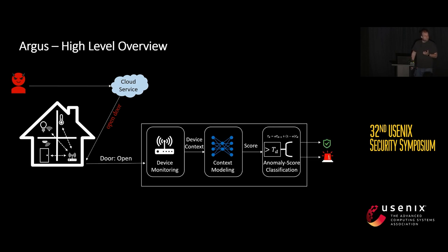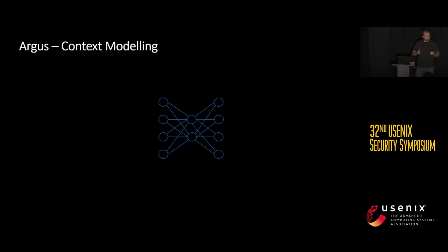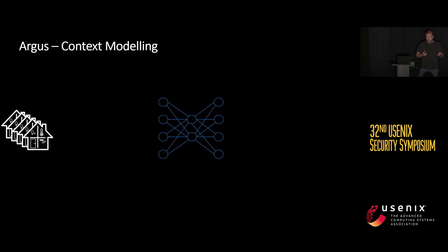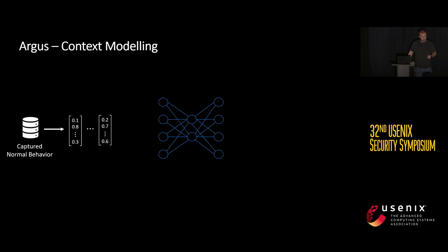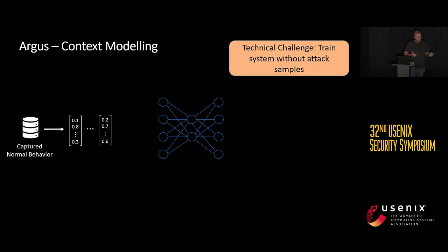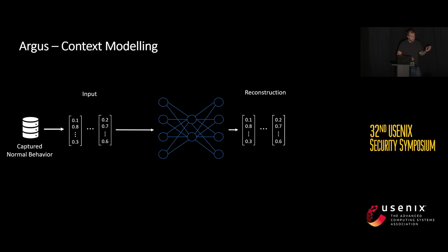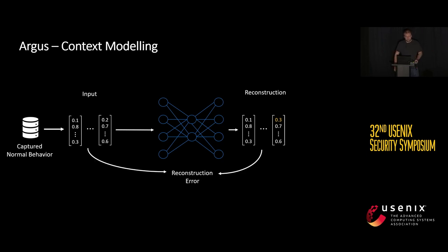The context modeling component calculates an anomaly score that is compared against the dynamically tuned threshold. The context modeling operates on the IoT device context — the states of all IoT devices. We collect these device states over a certain time range to obtain a picture of how the smart home should behave normally, and use this as benign training data. These training data are then converted into feature vectors. The question is how we can train a neural network to detect attacks without having any training samples for the attacks themselves.